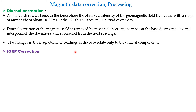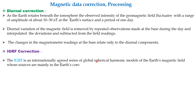Subtracting the base station readings removes the diurnal components — this is called magnetic data reduction or correction. The IGRF correction uses spherical harmonic models, the theoretical models of the Earth's magnetic field, assuming that sources of the magnetic field are in the outer core where the internal magnetic field is created. To get details of the Earth's crust, we subtract the IGRF correction from the main field to get the crustal information.